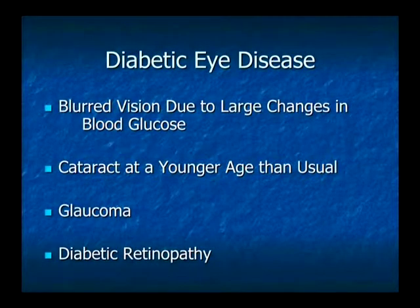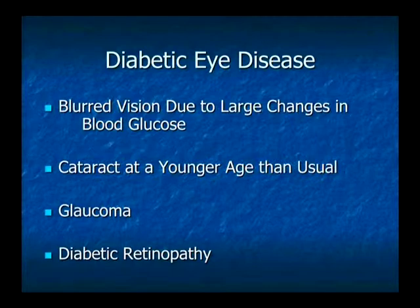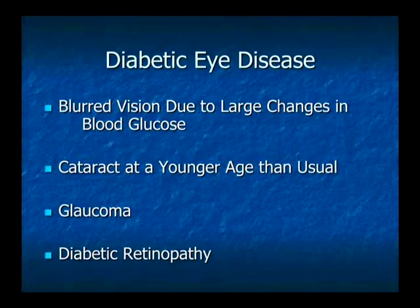So diabetic eye disease — the symptoms can be simple blurred vision. In fact, the most common thing that blood sugar fluctuation can cause to the eyes is blurred vision when the sugar is changing up and down quite a bit. It's not from any permanent damage to the eye; it's just a symptom that the sugar is changing. Many of you may know that if your vision seems a little blurry, you should check your blood sugar.